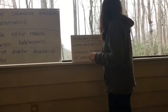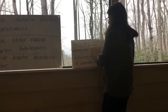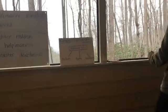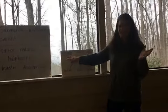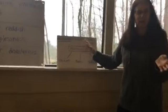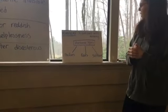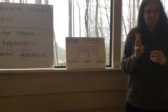Before we get into the strategy there are a couple of things I want you to know. A lot of words are made up of parts and those parts are called morphemes. A morpheme is a fancy word that means a word part with meaning. There are three types of morphemes that we're going to talk about: prefixes, roots, and suffixes.